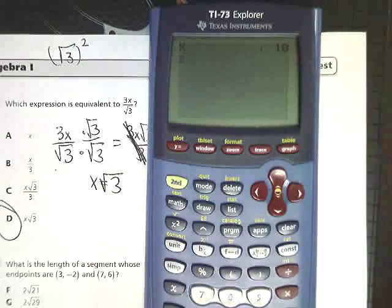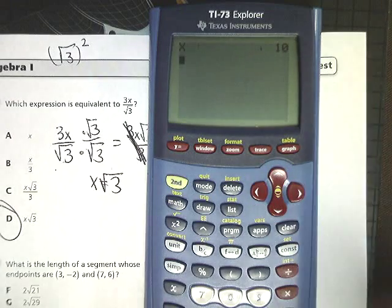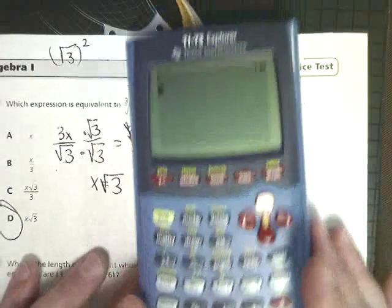And once again, if it is, go up and graph something, 3x plus 5, and hit graph, and it'll change it. It doesn't matter what number it turns it into.